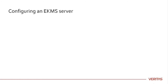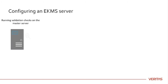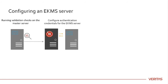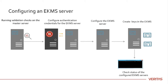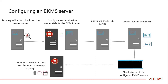You can configure an external KMS server for NetBackup in these simple steps: From the master server, run pre-configuration validation checks for the eKMS server; configure the credentials that NetBackup uses to authenticate the external KMS server; configure the KMS to work with NetBackup; create keys in the KMS; check status of the external KMS servers; configure how NetBackup uses the keys to manage storage; and configure policy.